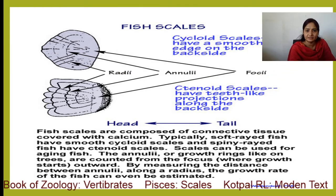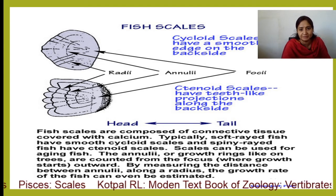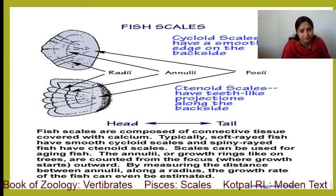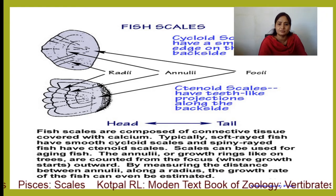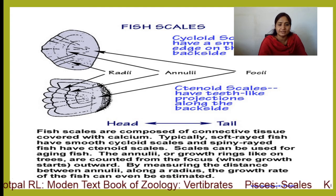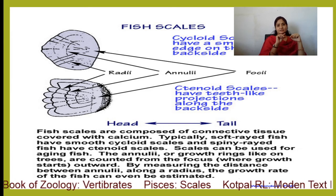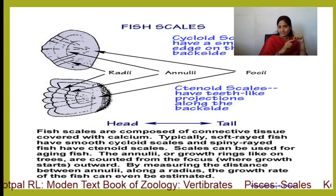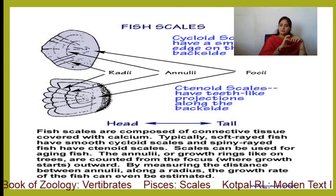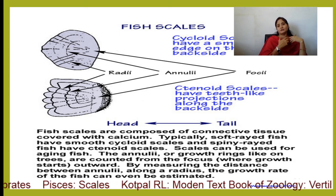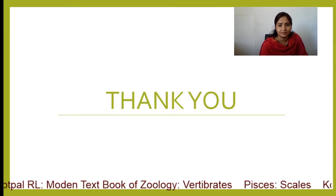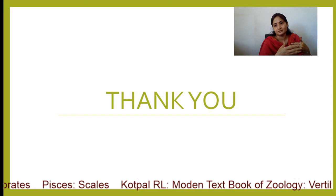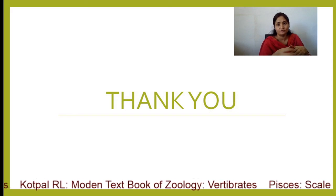To summarize: cycloid scales have a smooth edge on the back side, while ctenoid scales have tooth-like projections along the back side. Fish scales are composed of connective tissues covered with calcium. Typically, soft-rayed fishes have smooth cycloid scales and spiny-rayed fishes have ctenoid scales. Scales can be used for aging of fishes — the nucleus serves as a focus with concentric layers representing the age of the fish. In the next video we will cover placoid scales, their homologies, their development, their functions, and their importance.